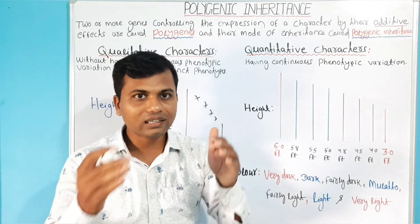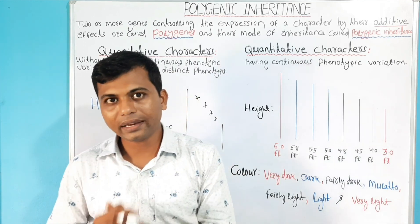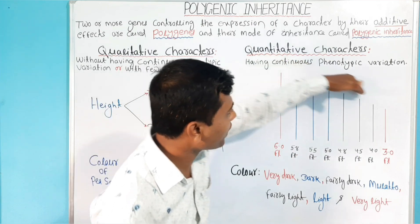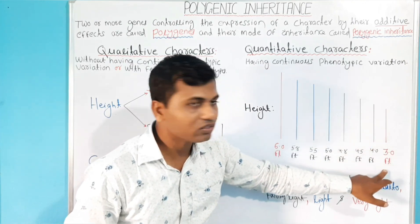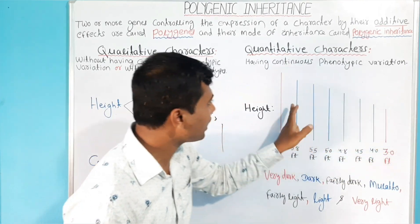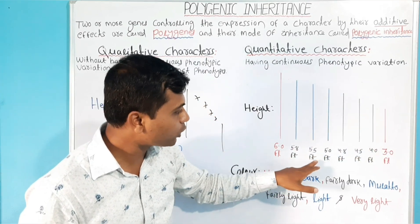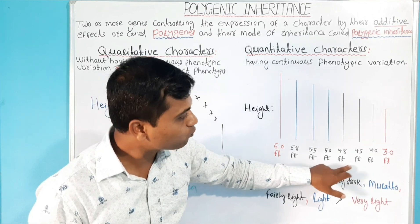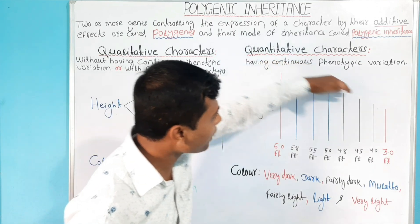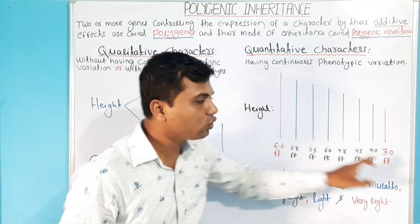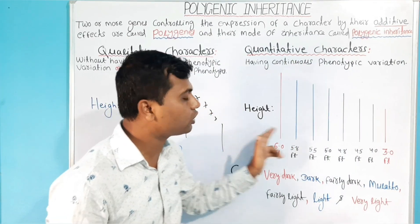Suppose we are having a class having many students. If you ask all the students to stand on the basis of height, then we will have a wide range of height. Some are tall having height 6 feet, some are dwarf having height 3 feet. In between tall and dwarf, there are many forms of heights present — like 5.8 feet, 5.5 feet, 5 feet, 4.8 feet, 4.5 feet, and 4 feet. The presence of many forms of heights between tall and dwarf makes a continuous phenotypic variation of the height from tall to dwarf.